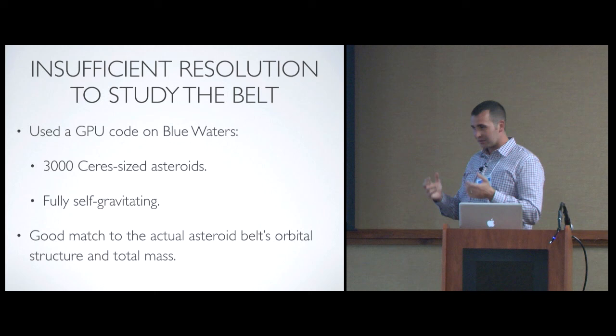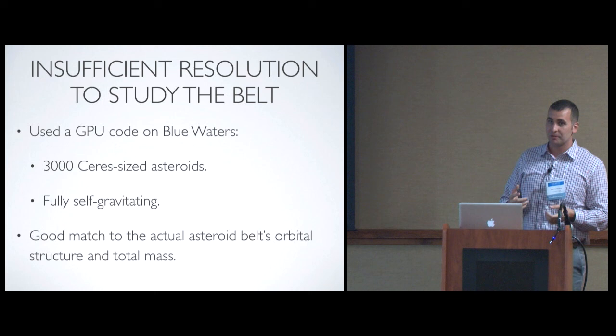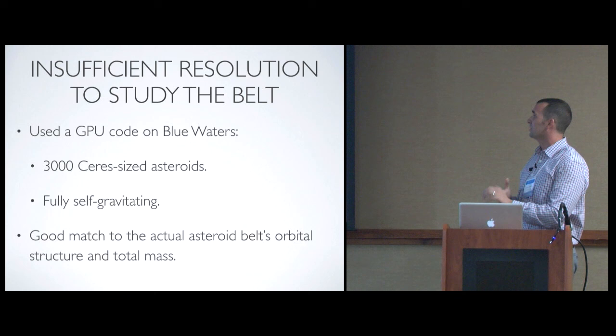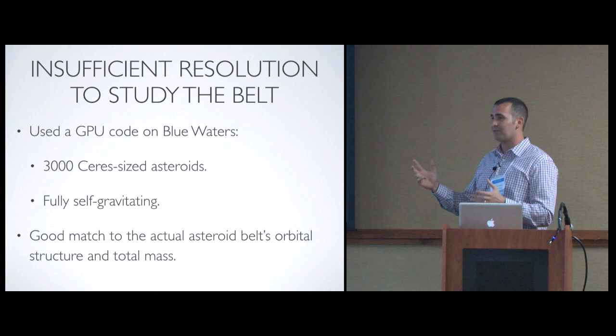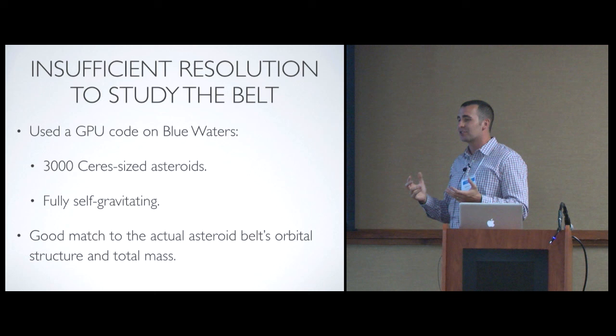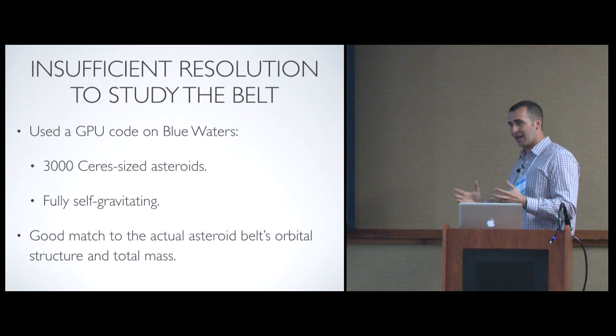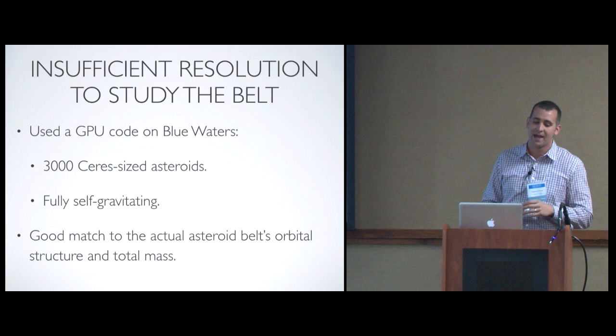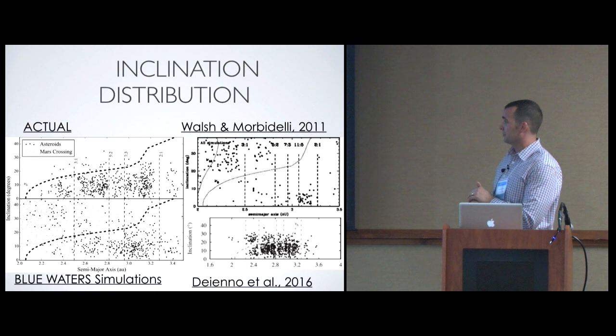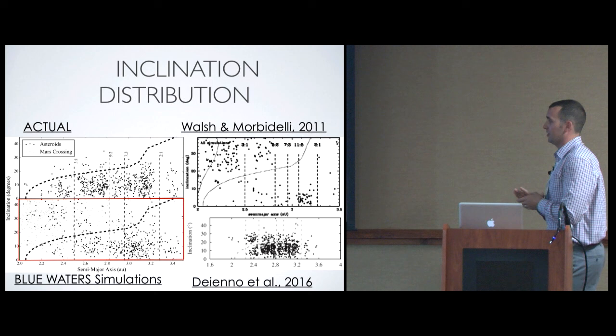So what about the asteroid belt problem? Again, we used Blue Waters this last year to redo a bunch of these simulations using a GPU code that can perform calculations in parallel and greatly speed up simulations. So our original simulations, at the end of simulation, you'd just have five or ten objects out in the asteroid belt. If you saw in that video, we just have a few asteroids out there. Those asteroids are actually like 20 times the mass of the present asteroid belt, so it's not very realistic. So we redid these simulations using 3,000 Ceres-sized asteroids. Ceres is the largest asteroid in the asteroid belt, so we're actually probing this process down to realistic mass scales in the asteroid belt.